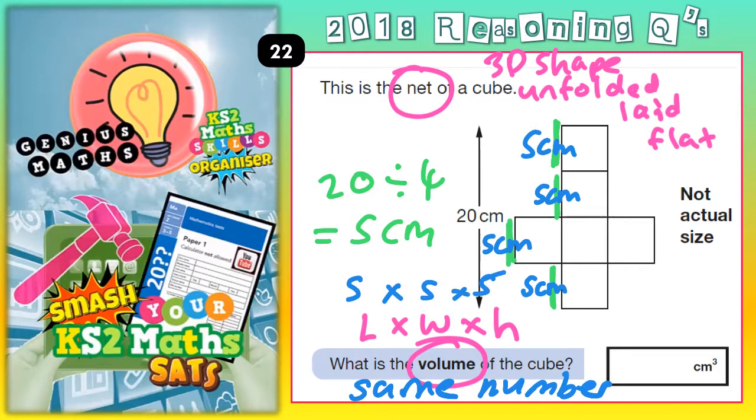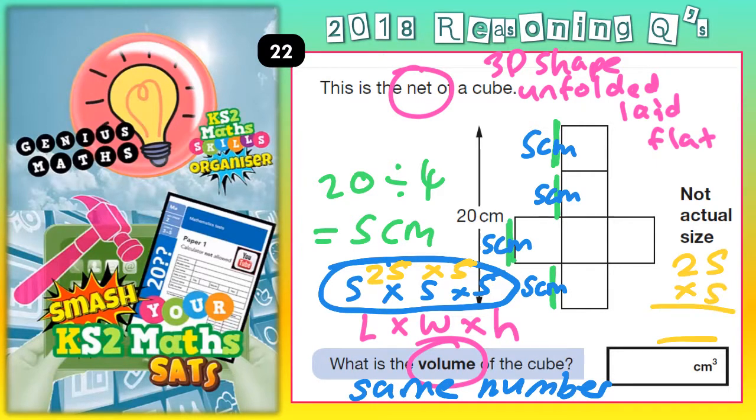If we do 5 × 5 × 5, we are going to have our volume. Well, 5 × 5 is 25. So you need to do 25 × 5 and then you'll have your final answer. 5 fives are 25, 5 twos are 10 plus 2 is 12. So your final answer is 125 centimeters cubed.